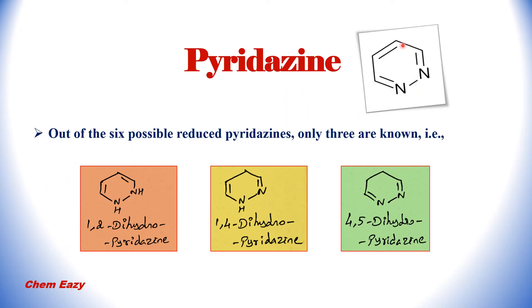This is the structure of pyridazine. This is a 6-membered ring heterocyclic compound which consists of 2 heteroatoms, that is nitrogen, in the first and second position. There are 6 possible reduced pyridazines, of which only 3 reduced pyridazines are known: 1,2-dihydropyridazine, 1,4-dihydropyridazine, and 4,5-dihydropyridazine.